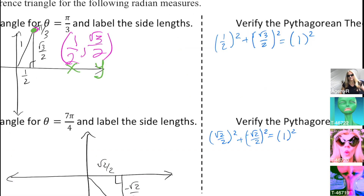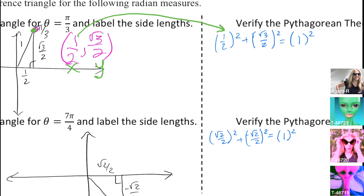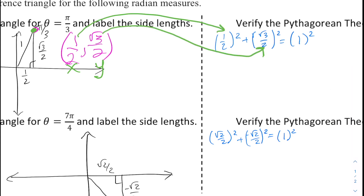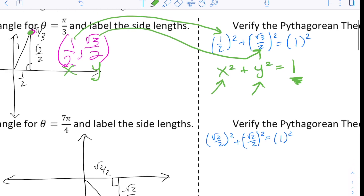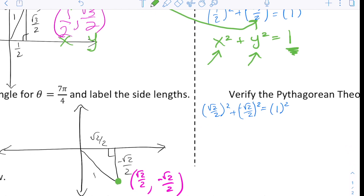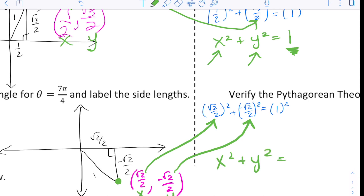Let's take a closer look. If we label the coordinate on our reference triangle, we can see that the x and y coordinates correspond to the values in our Pythagorean theorem verification. So we could write: x-coordinate² + y-coordinate² = 1. Now let's see if that holds true in the second example. We can label the coordinate as well, and we can see that the √2/2, which is the x-coordinate, corresponds to the Pythagorean theorem verification, as well as the y-coordinate, giving the same result.